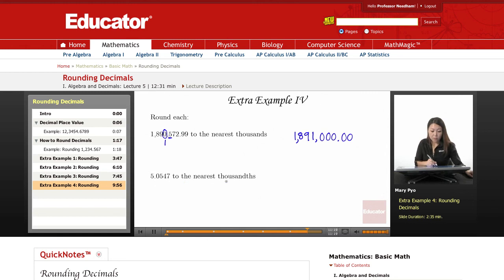Now this one is to the nearest thousandths with a th. So that means we know it's behind the decimal point. Here's tenths, hundredths, thousandths. So then I'm going to round to that number.